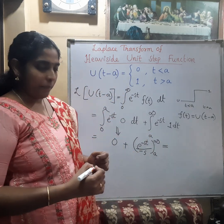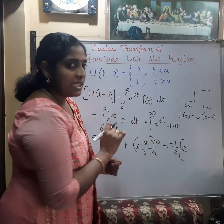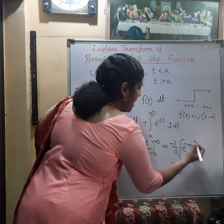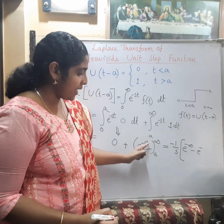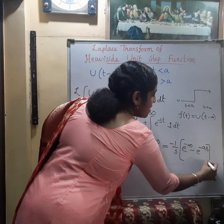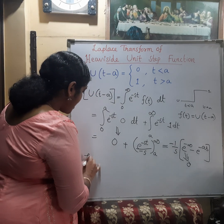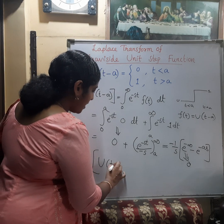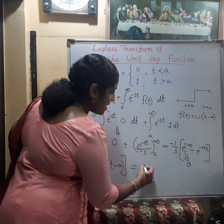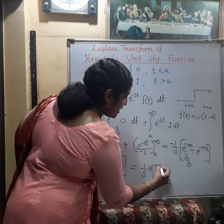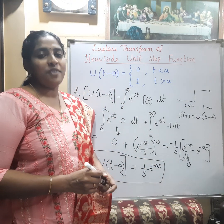Applying the limits: we take −1/s outside; the upper limit gives e^(−∞), which equals 0, minus e^(−as) from the lower limit t = a. Since e^(−∞) is 0, the answer becomes 0 minus (−1/s · e^(−as)), giving 1/s · e^(−as). So the Laplace transform of the Heaviside unit step function u(t − a) is e^(−as) / s. Thank you.